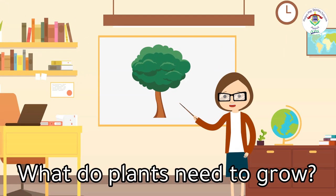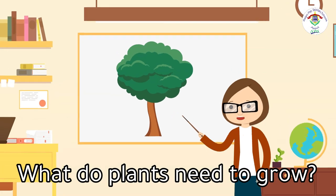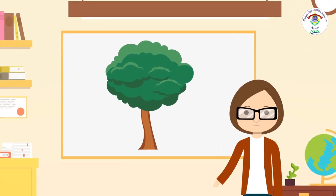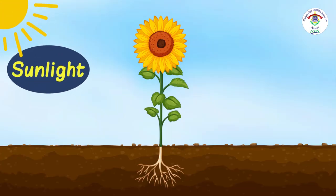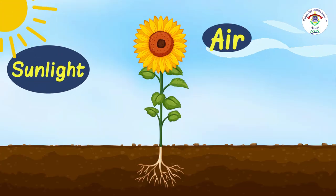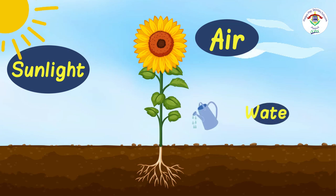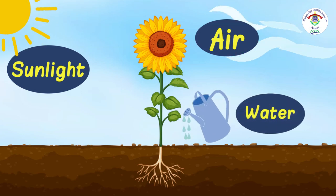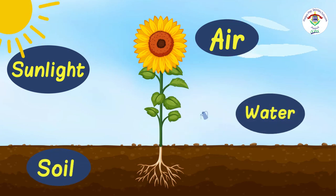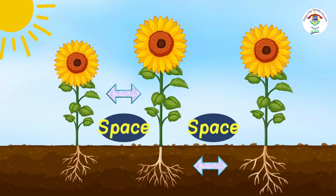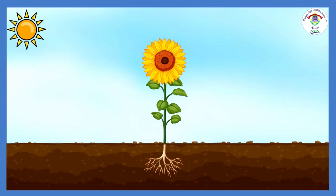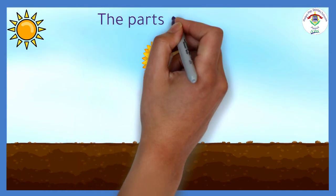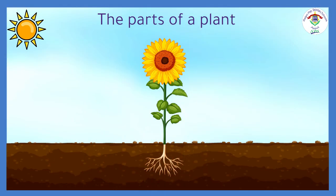What do plants need to grow? Sunlight, air, water, soil, and space. Now let's see the parts of a plant.